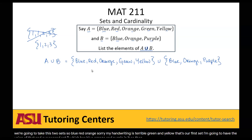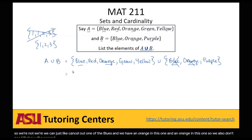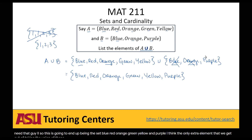Notice that we have a blue in this one and a blue in this one, so we can cancel out one of the blues. And we have an orange in this one and an orange in this one, so we don't need the second one either. So this is going to end up being the set: blue, red, orange, green, yellow, and purple. The only extra element we get from taking the union of these two sets is purple. So that is our solution.